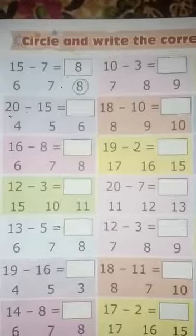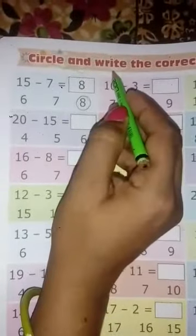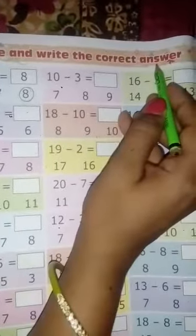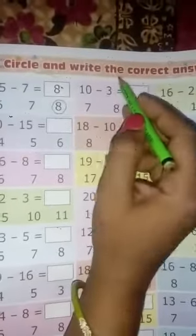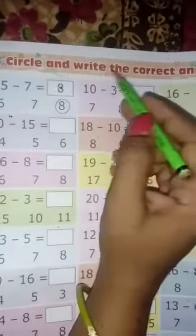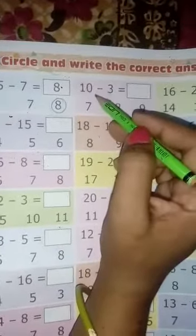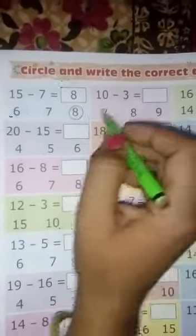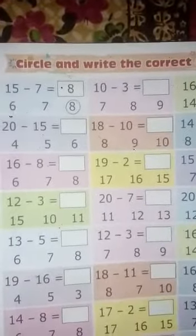Today I will teach circle and write the correct answer. Joh answer jo sahih ho, usse likhkar aur jo sahih usko circle karna hai. This is a subtraction type questions, start for question.